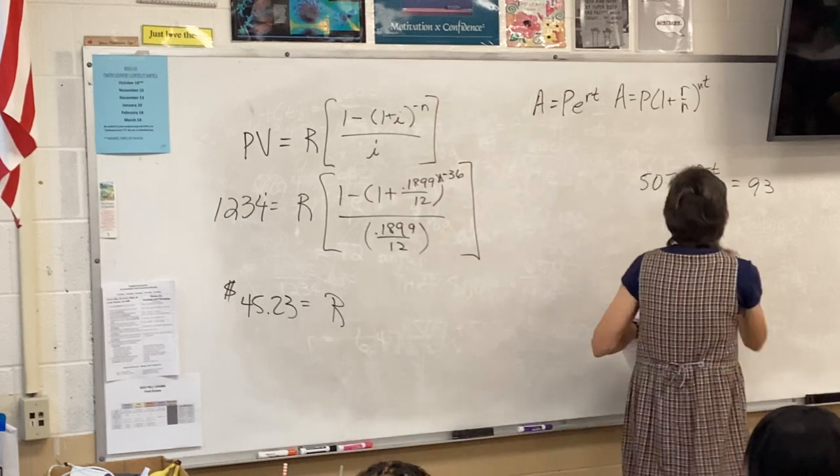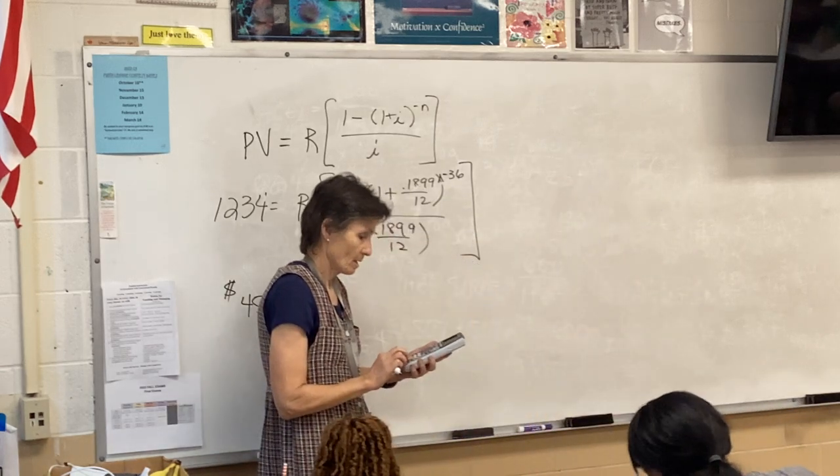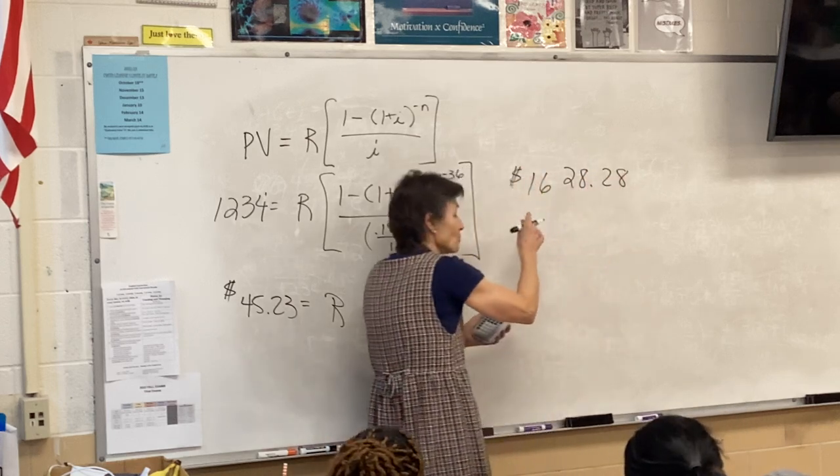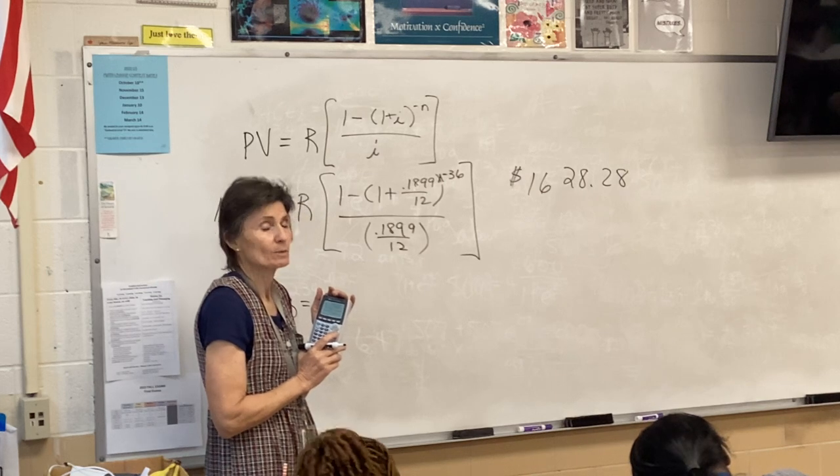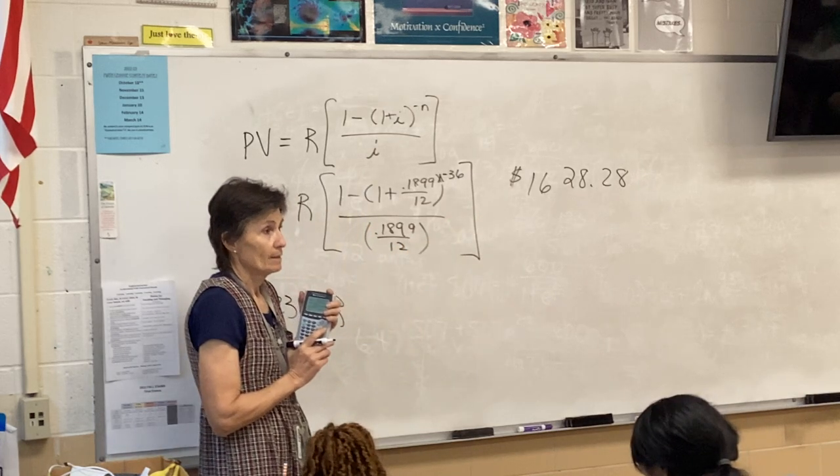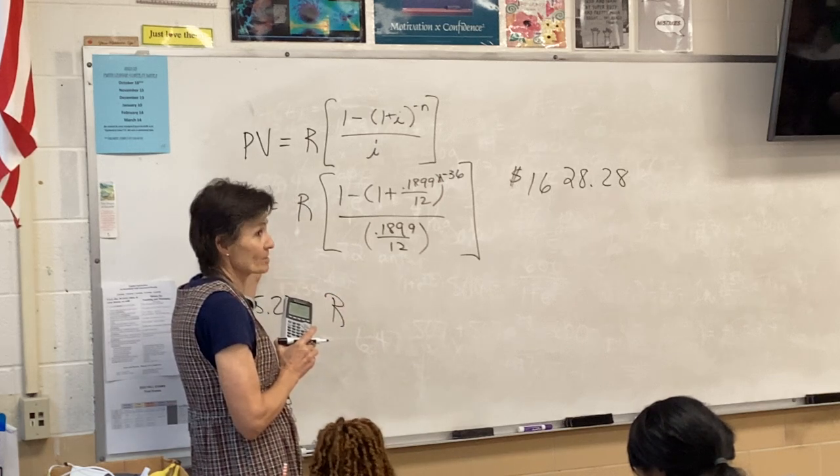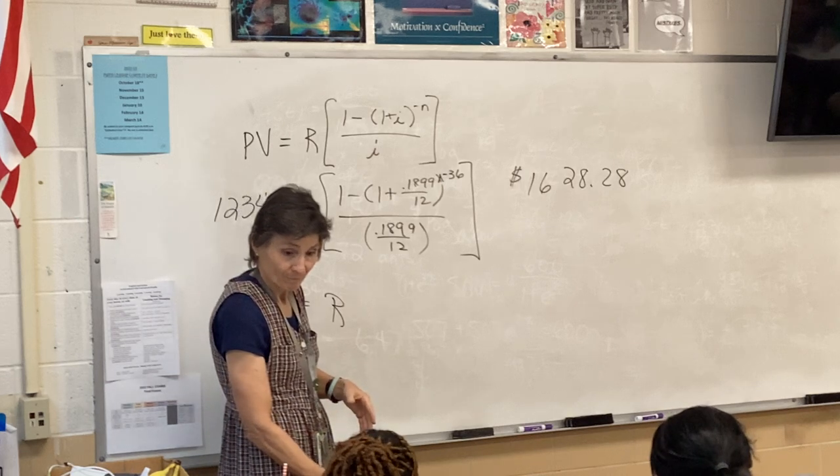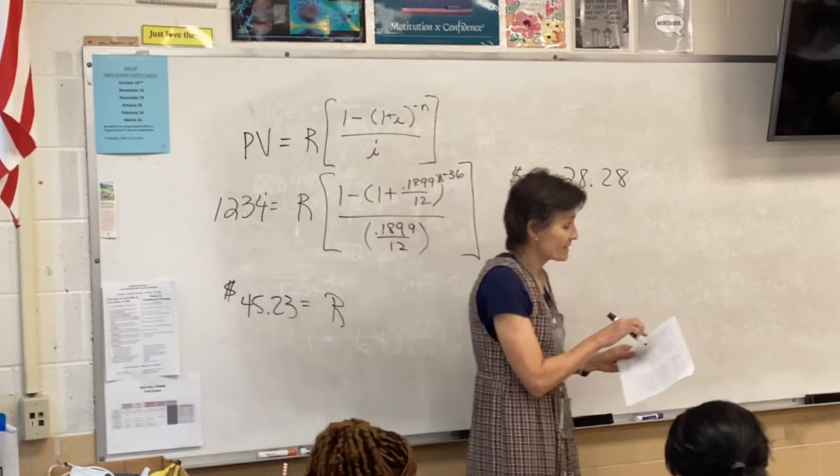Question A says, what will your monthly payment be? $45.23. Question B. What is the total amount that this is going to cost you? Well, you're going to pay $45.23 a month for 36 months. So, it's going to cost you $1,628.28. That's what you're going to end up paying. And people look at that and say, oh, well, that's only an extra $400. Well, there's only $1,200 to start with. So, that's like 33% extra.